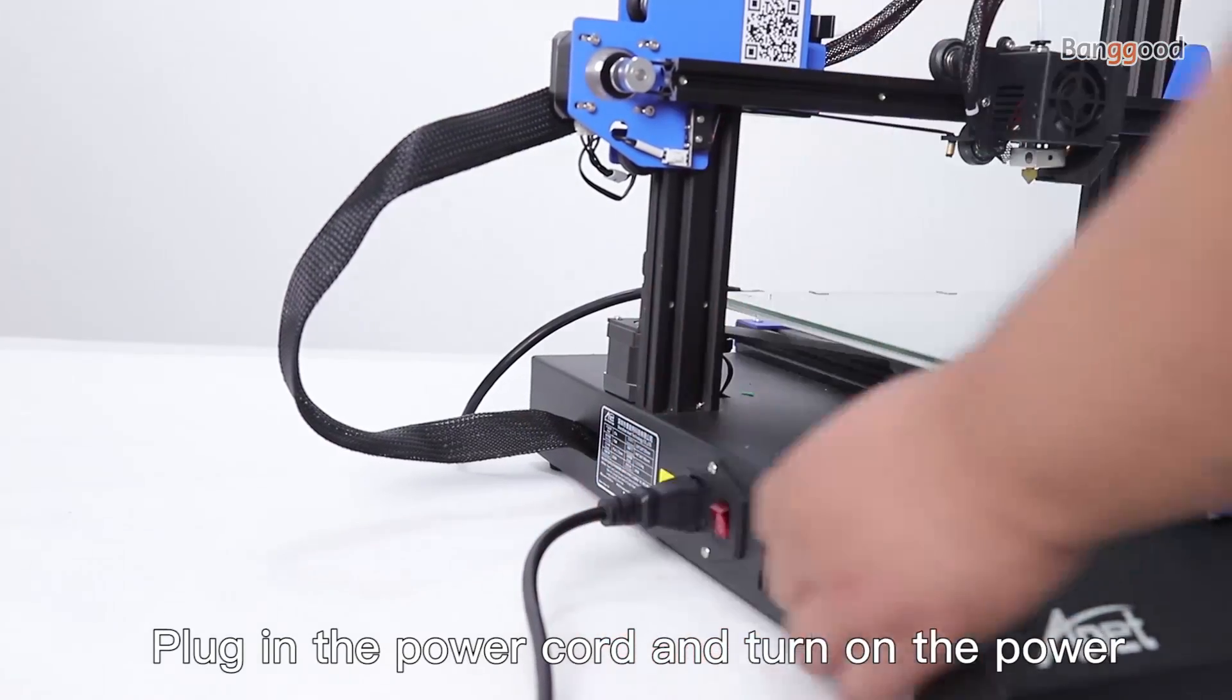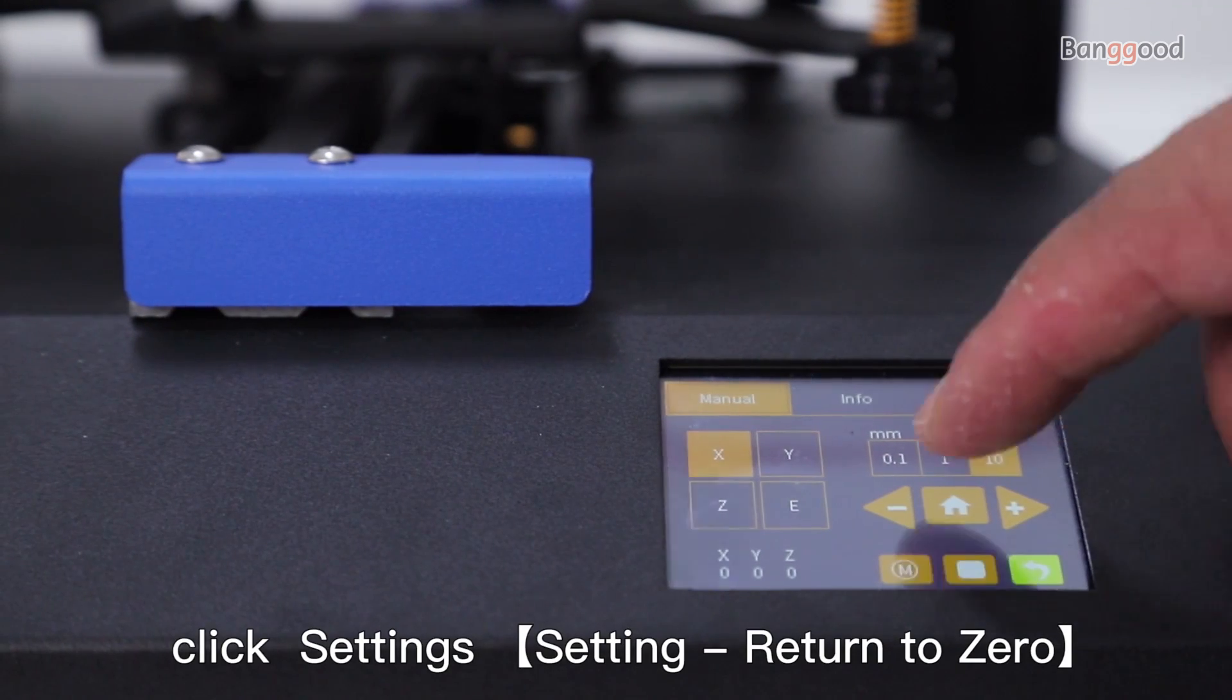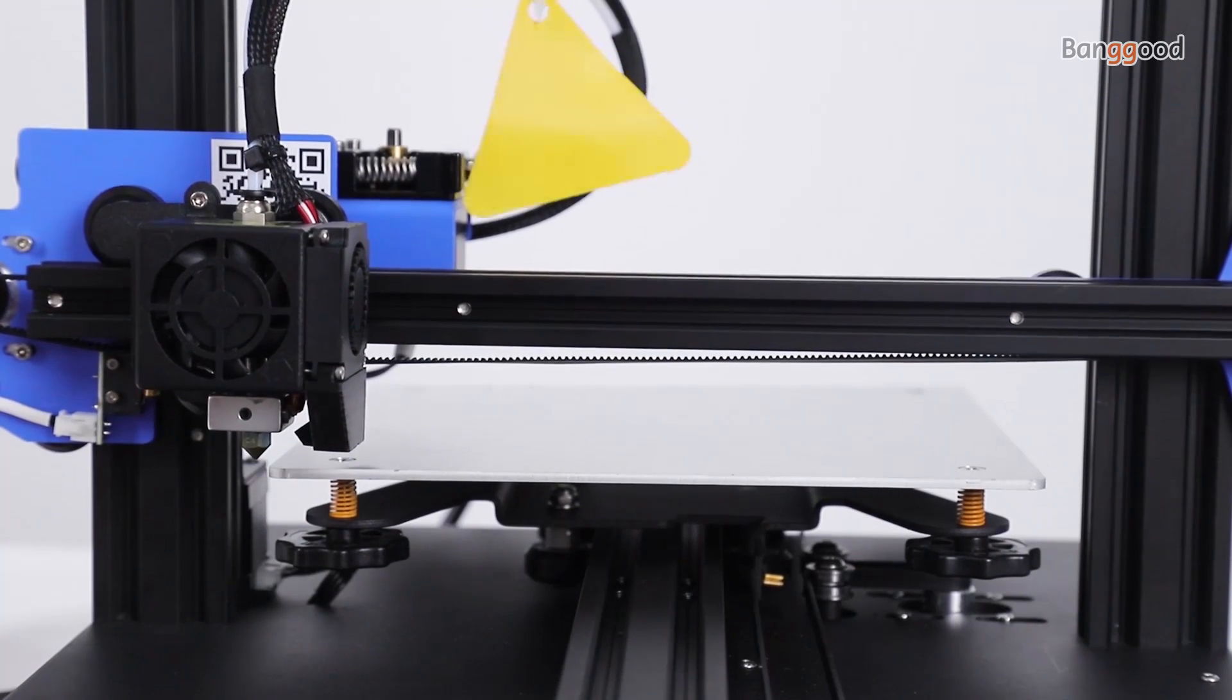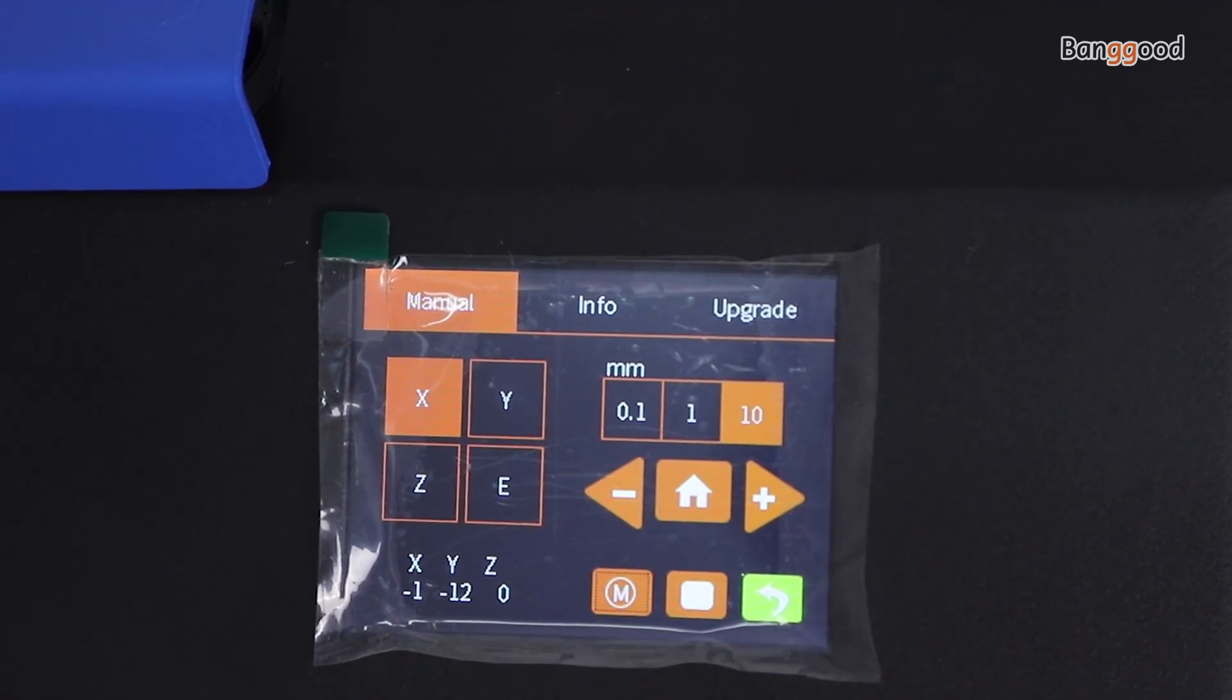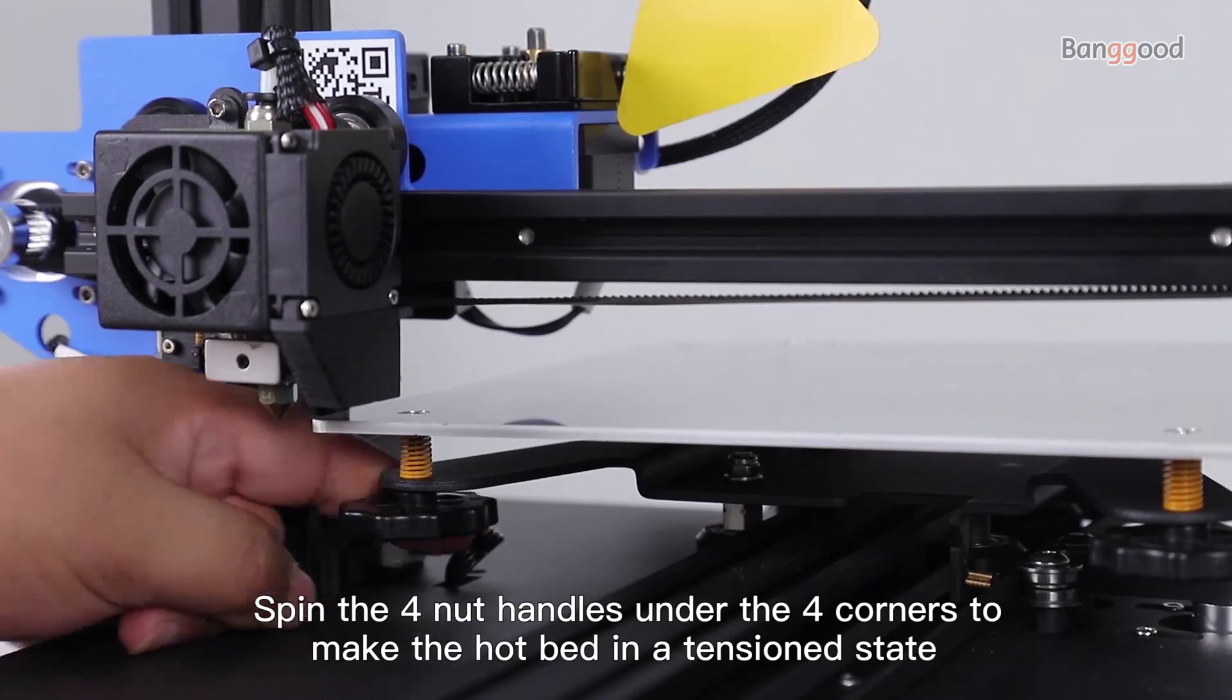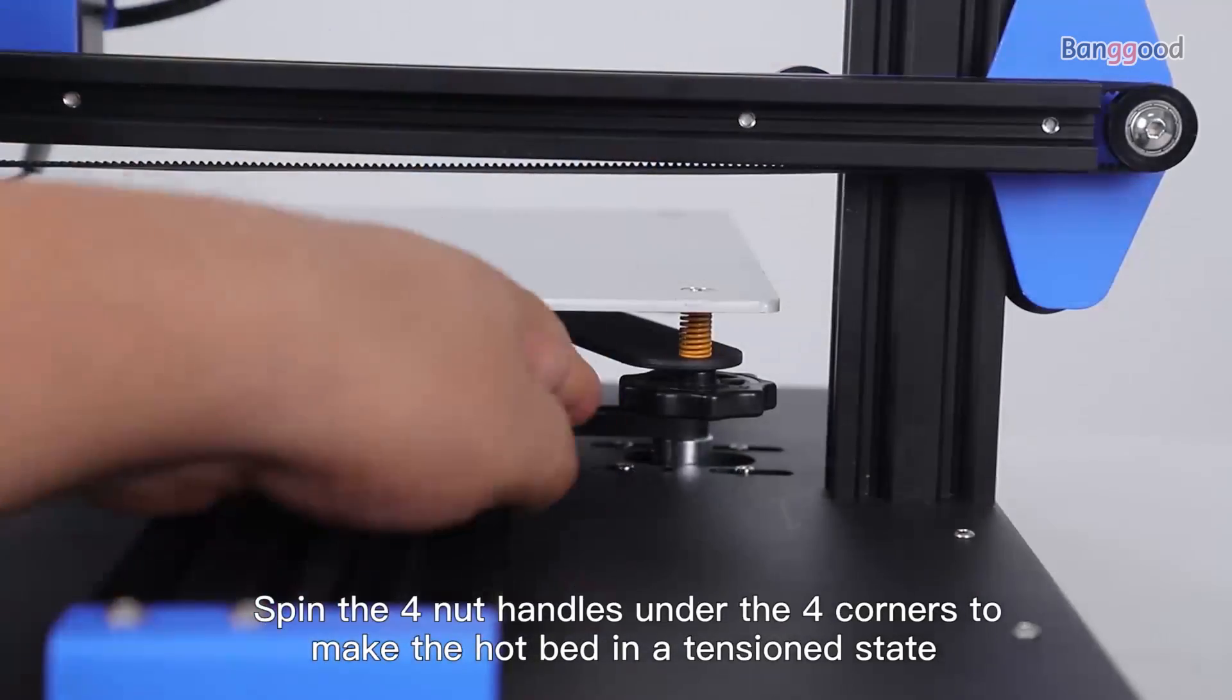Plug in the power cord and turn on the power. Click settings and turn off all motors. Spin the four nut handles under the four corners to make the hotbed and the sensors level.